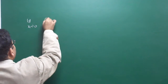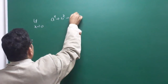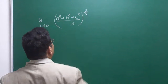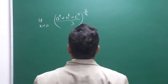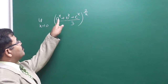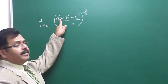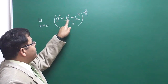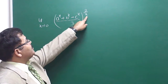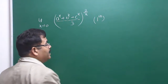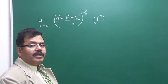Now here is another question: limit x tends to 0 of ((a^x + b^x + c^x)/3) to the power (2/x). If x = 0, each exponential is 1, so (1+1+1)/3 = 1, and 2/x → ∞. So this is in the 1^∞ indeterminate form.